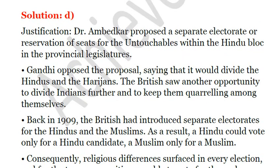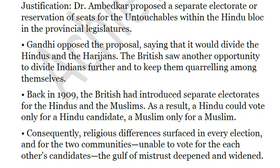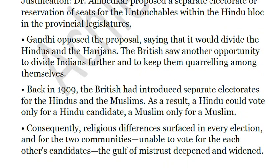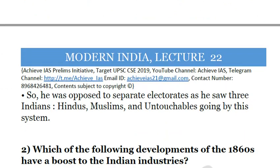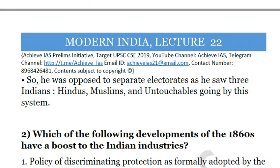The explanation is that Gandhi opposed the proposal because it would divide Hindus as well as Harijans, giving the British another opportunity to divide Indians and further their empire in India. In 1909, the British had introduced separate electorates for Hindus and Muslims, which adversely affected their unity. For the same reason, Gandhi was opposed to separate electorates for Dalits. The answer is D: none of these statements is correct.